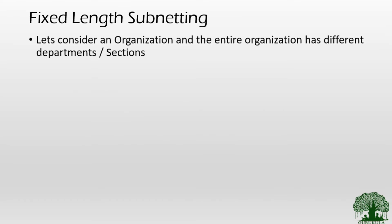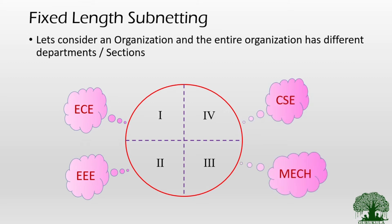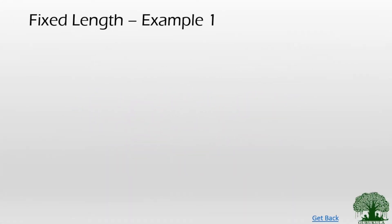Getting into fixed length subnetting, let us consider an example. Consider an organization divided into departments and sections. For example, an engineering section divided into four departments: ECE, EEE, Mechanical, and CSE — much like dividing RMK CET college into four departments. A theoretical perspective alone won't help us understand fixed length subnetting, so we'll work through an example.